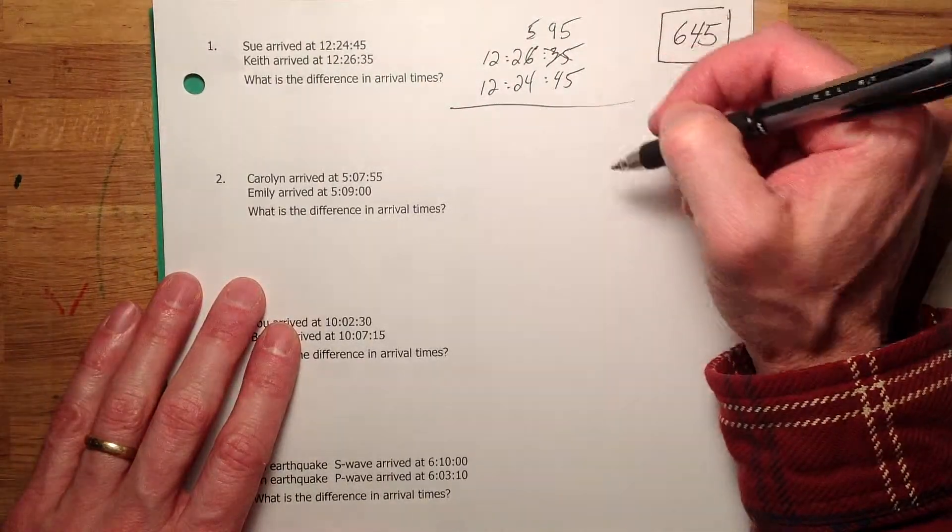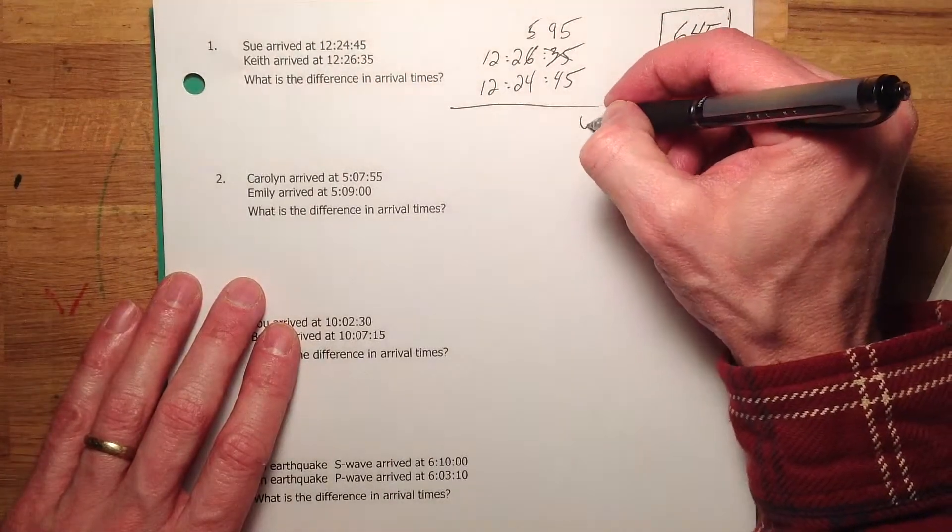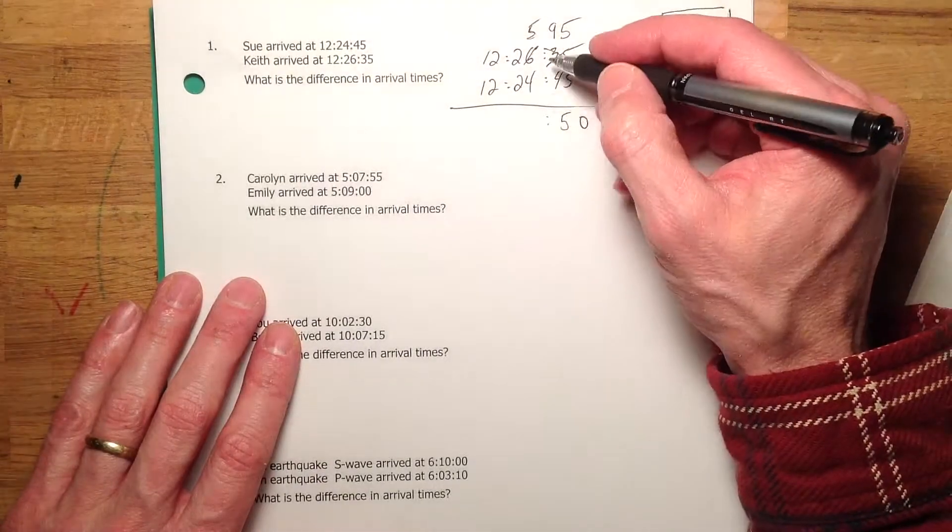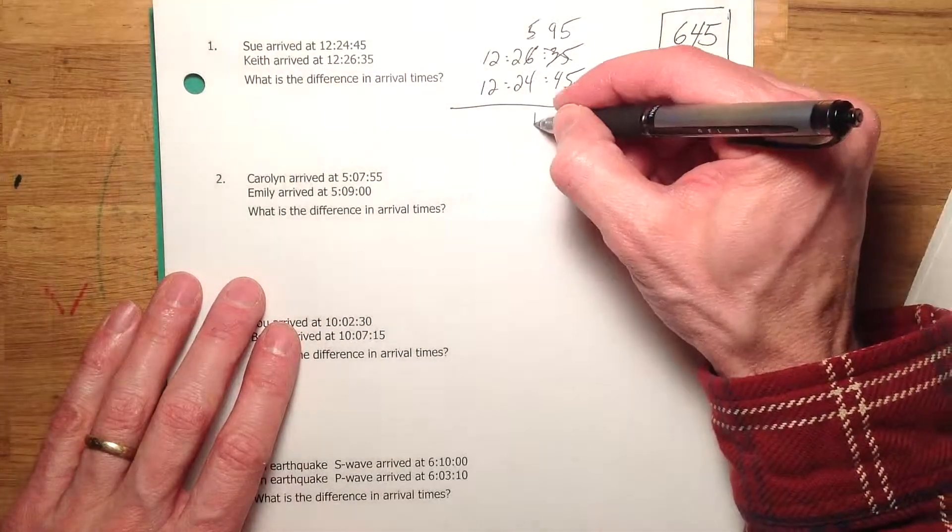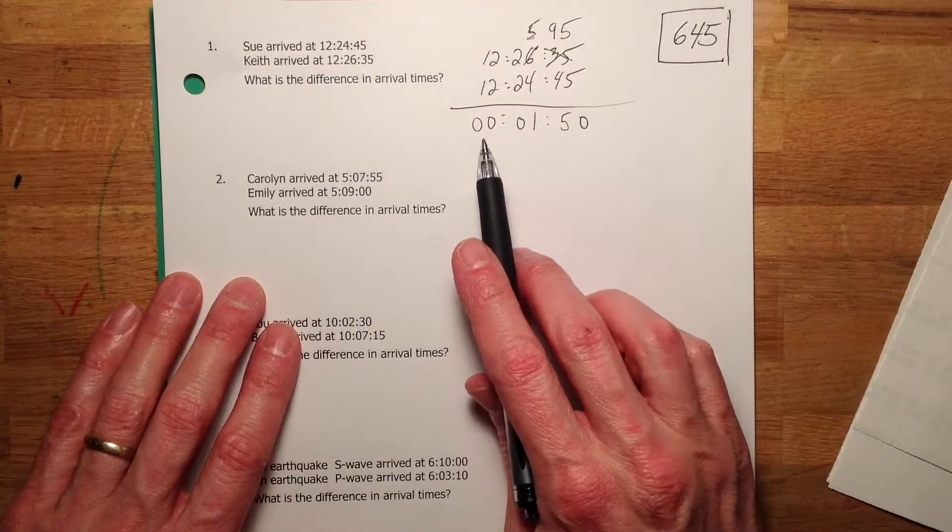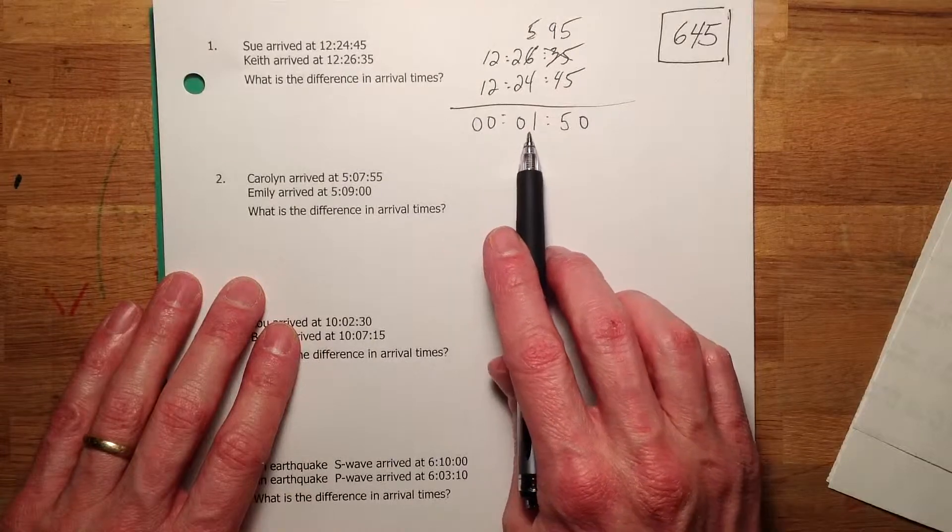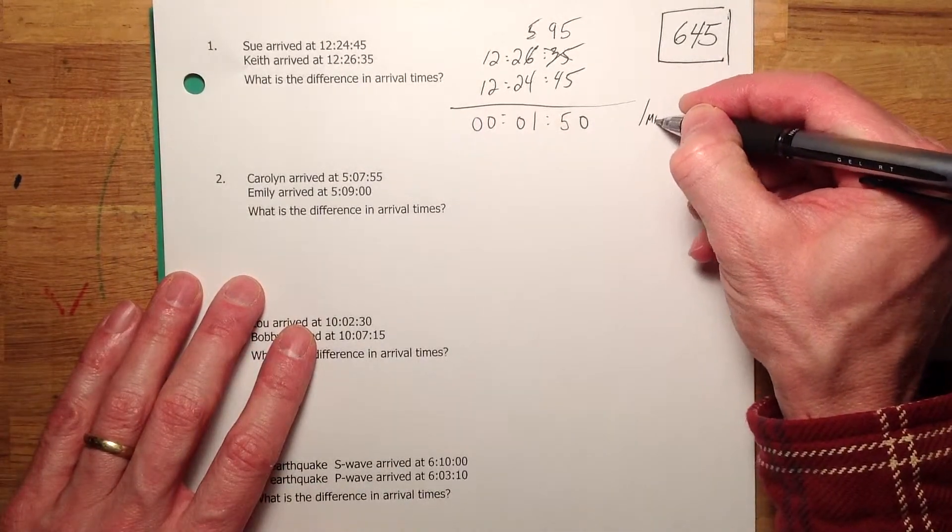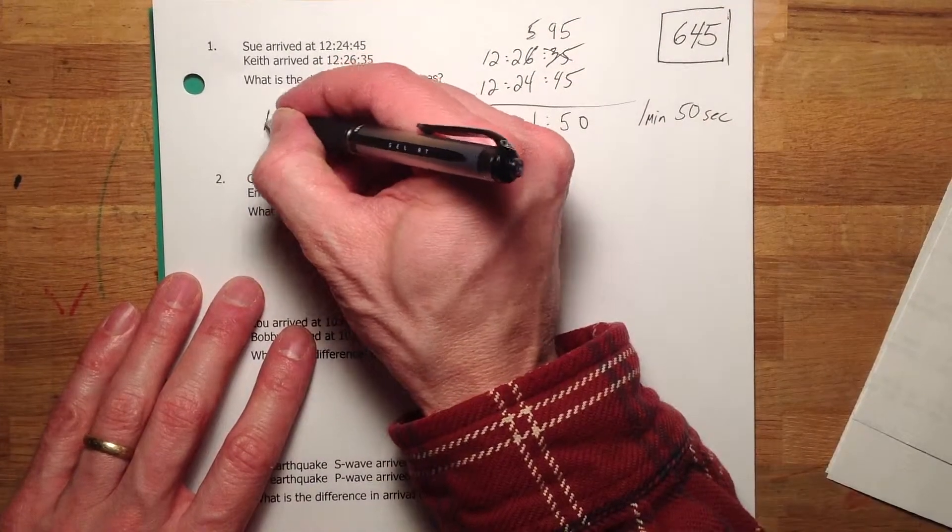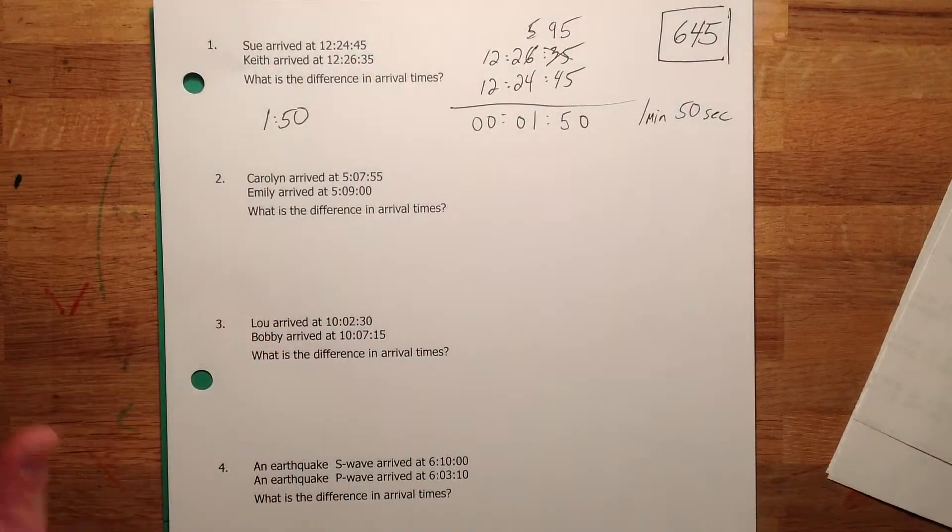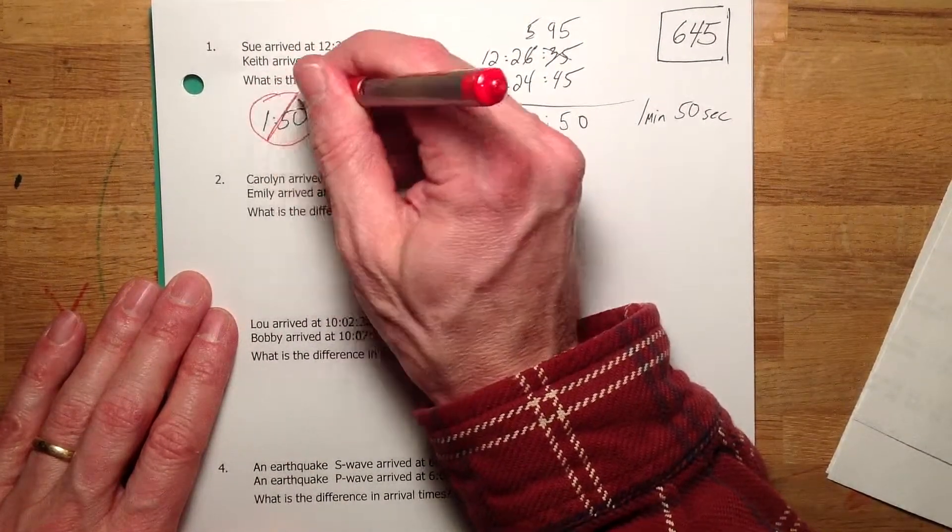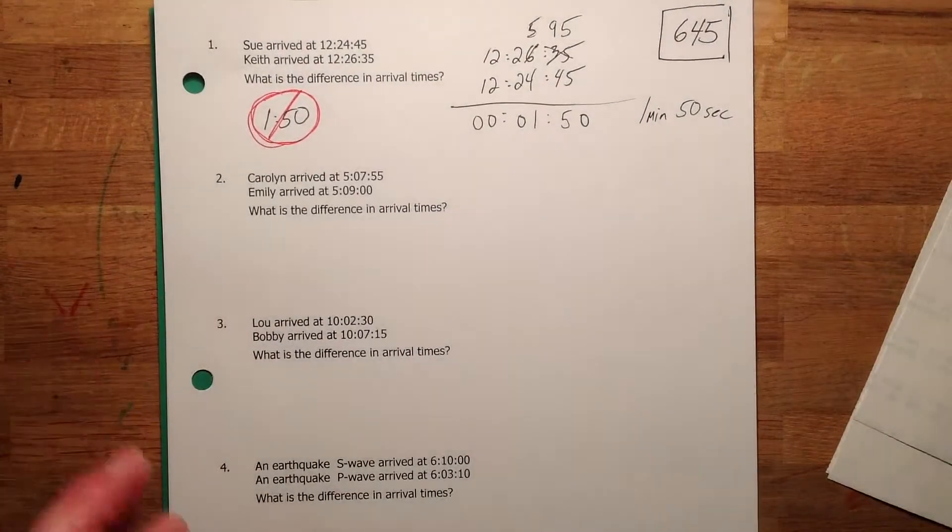And now, you should be able to take 45 away from 95. Now, it's just regular math. 5 minus 5 is 0. 9 minus 4 is 5. So, it's 50 seconds. Bring down the colon. And then again, regular math. 5 minus 4 is 1. That's 0 and that's 0. Now, you can write it like that. That's your answer. Because it'd be no hours, 1 minute, 50 seconds. Or you could write it like this. But what you don't want to do is this. Because while you're trying to say 1 minute and 50 seconds, it looks like 1 hour and 50 seconds. So, don't do that.